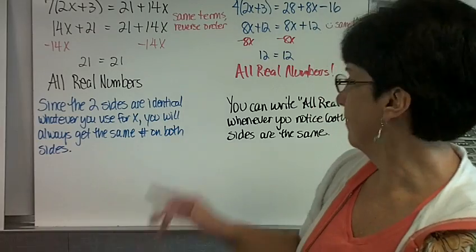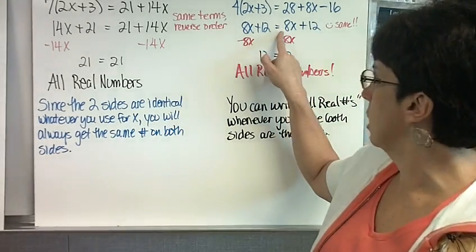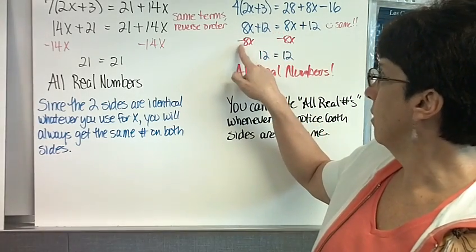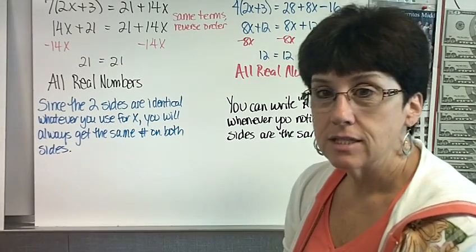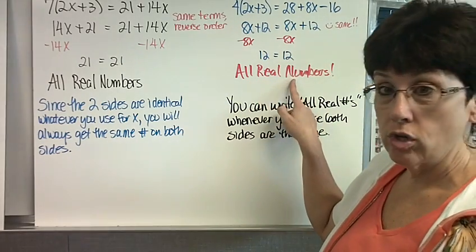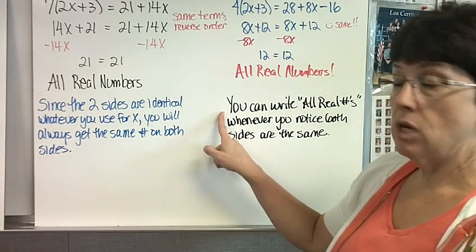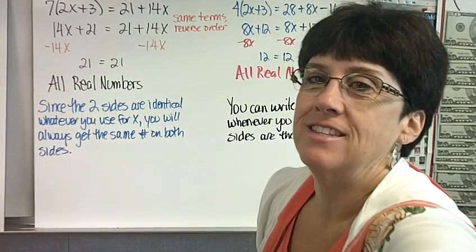Let's say you don't notice that. So we're going to subtract the variable term that's the smallest. Oh, my gosh, they're the same. I'm going to subtract this one. So I subtract 8x on both sides and I get 12 equals 12. It's the same number. Yes, 12 will always equal 12. It's all real numbers. And once again, you can write the all real numbers whenever you notice both sides are the same. That's it.